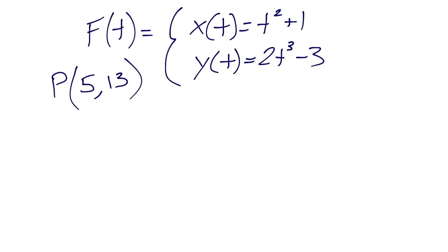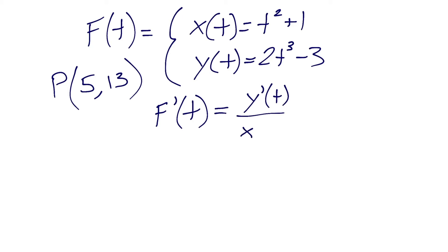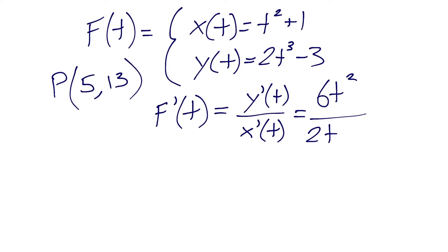We write out our formula: f prime of t equals y prime of t over x prime of t. The derivative of 2t cubed minus 3 gives us 6t squared on top. The derivative of t squared plus 1 gives us 2t on the bottom — the constants give us 0. Simplifying: 6 divided by 2 is 3, and one t cancels, leaving us with f prime of t equals 3t.